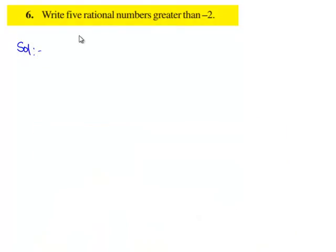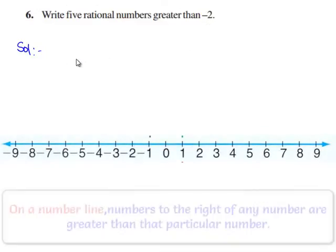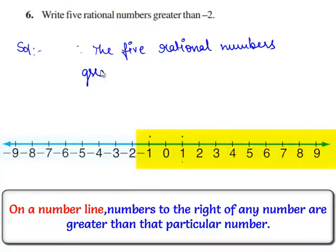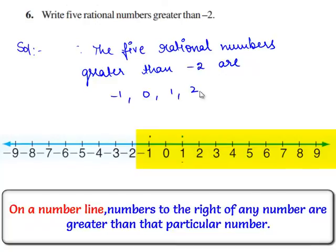We know that any positive rational number is always greater than the negative rational number. Therefore, any five rational numbers which are positive are always greater than minus 2. And also, minus 1 and 0 are greater than minus 2. Therefore, the five rational numbers greater than minus 2 are: minus 1, 0, 1, 2, and 3.